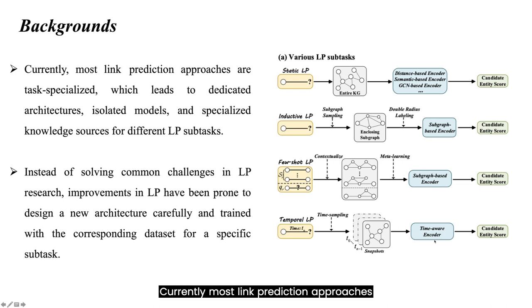Currently, most link prediction approaches are task-specialized, which leads to dedicated architectures, isolated models, and specialized knowledge sources for different LP subtasks. And the corresponding modeling advances make the progress of each subtask seemingly unique and incompatible.